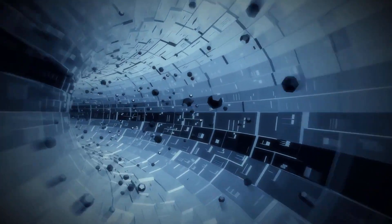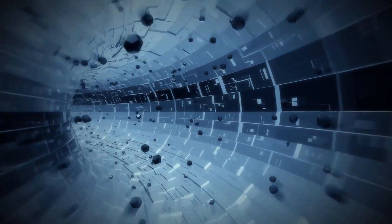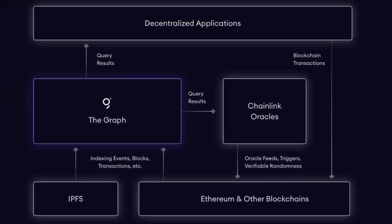How do they work together? The integration allows indexed data from the Graph's APIs — called subgraphs — to be relayed to smart contracts via Chainlink oracles. This opens up opportunities for developers to use indexed data sets to build powerful, truly decentralized applications. Synthetix is an example of a DeFi dApp that combines the best of both middleware protocols — using Chainlink oracles for price feeds and powering the exchange UI using a subgraph. This integration is the start of an expansion in middleware protocols that seamlessly integrates to provide the infrastructure needed to build truly serverless and decentralized applications.